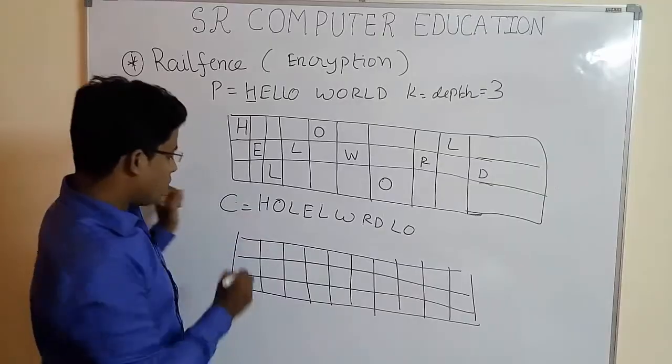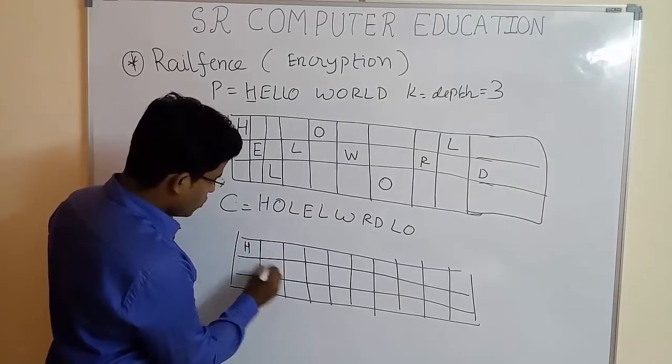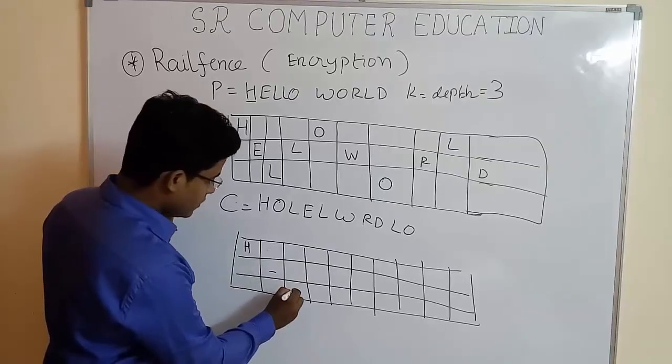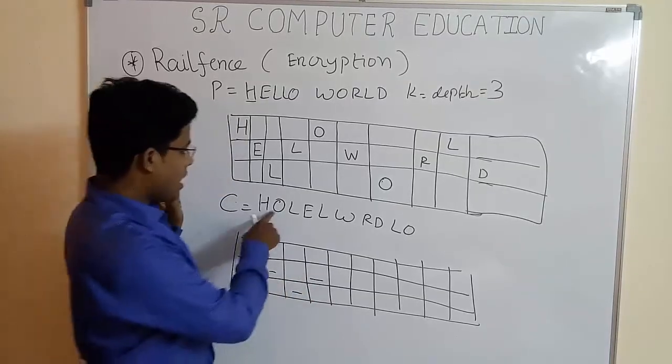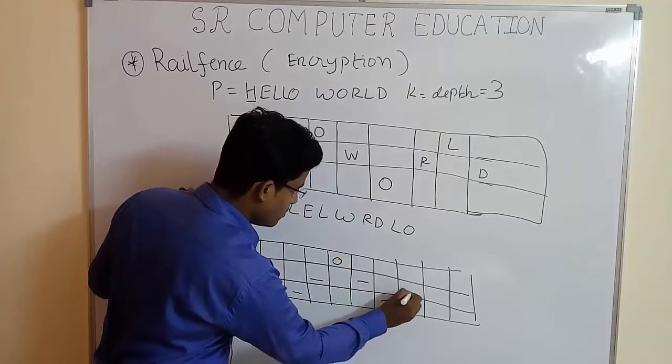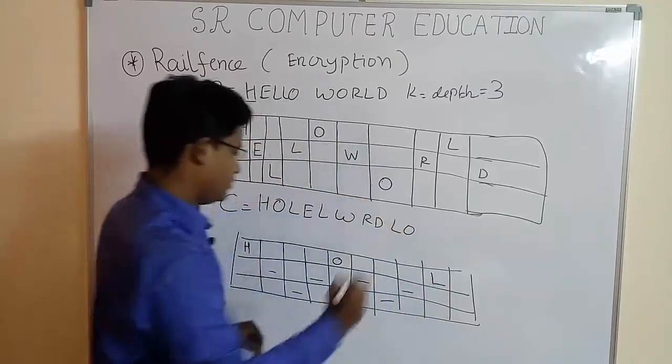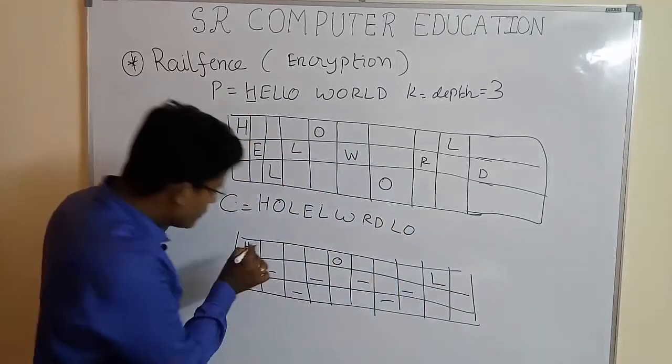Now you have to write first letter here. You have to leave a blank space here, here also blank, here also blank, and write O here. Blank, blank, blank, and L here. Okay, you have to follow this pattern like this.